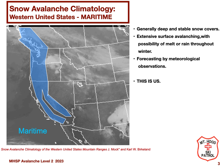The maritime region includes the coast and cascade ranges of Oregon, Washington, California, and British Columbia. This region is characterized by large amounts of snow resulting in deep snowpacks. The snow has a high moisture content, so it tends to stabilize quickly after a storm. Rain events can occur throughout the season, so wet avalanches are more common than in other regions. Forecasting is done primarily from weather observations.